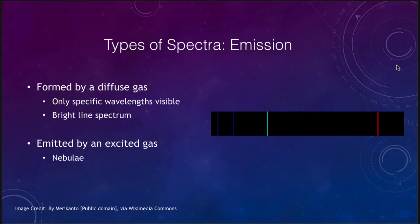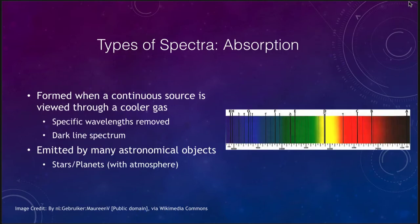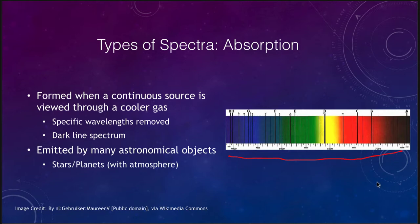It actually gets a lot more complicated than that, because objects are not made up of just one element but of multiple elements, and those lines overlap each other. So it can be a difficult process to decipher — you have to match each of the wavelengths with the various atomic patterns. But that is how we can learn what things are made of out in space.